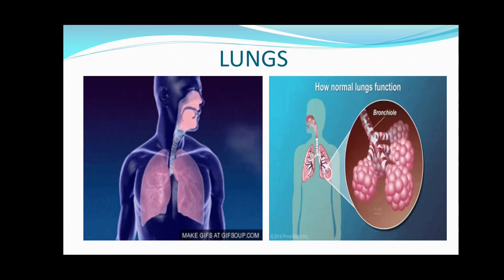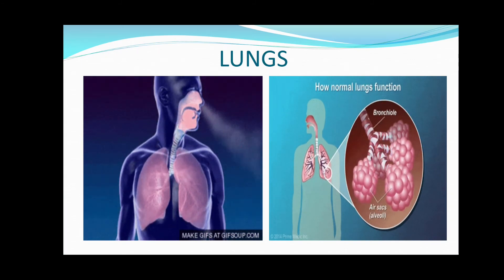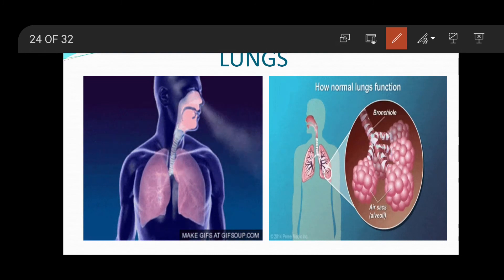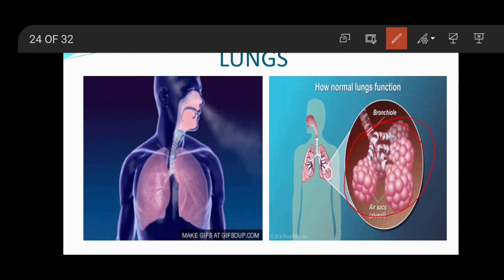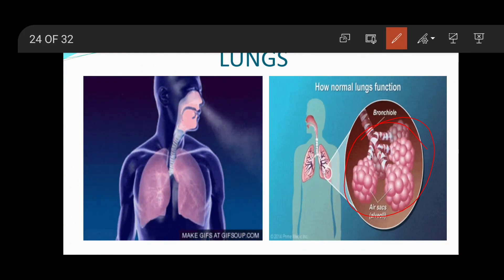Next is the lungs. The bronchi lead into the lungs, which are situated on either side of the chest cavity. Lungs contain a number of air sacs or alveoli, along with blood vessels. When air enters the lungs, the blood vessels around the air sacs take in oxygen and give out carbon dioxide and water. Oxygen is further carried by blood to different parts of the body, and carbon dioxide and water vapor are exhaled out from the lungs through the nose.